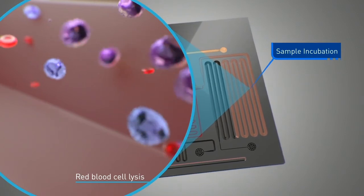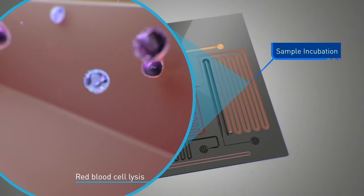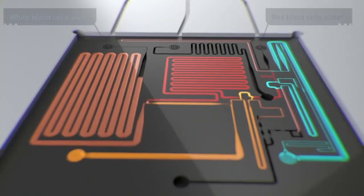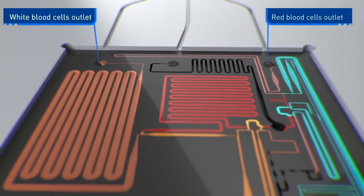This lysis process is completed in a timing channel, allowing sufficient time for the lysis reaction to take place. This nanofluidic processor has two outlets, one for white blood cells and one for the red blood cells and platelets.